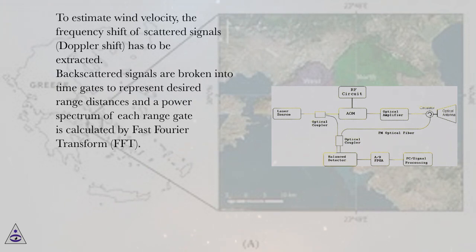Backscattered signals are broken into time gates to represent desired range distances and a power spectrum of each range gate is calculated by Fast Fourier transform, FFT.